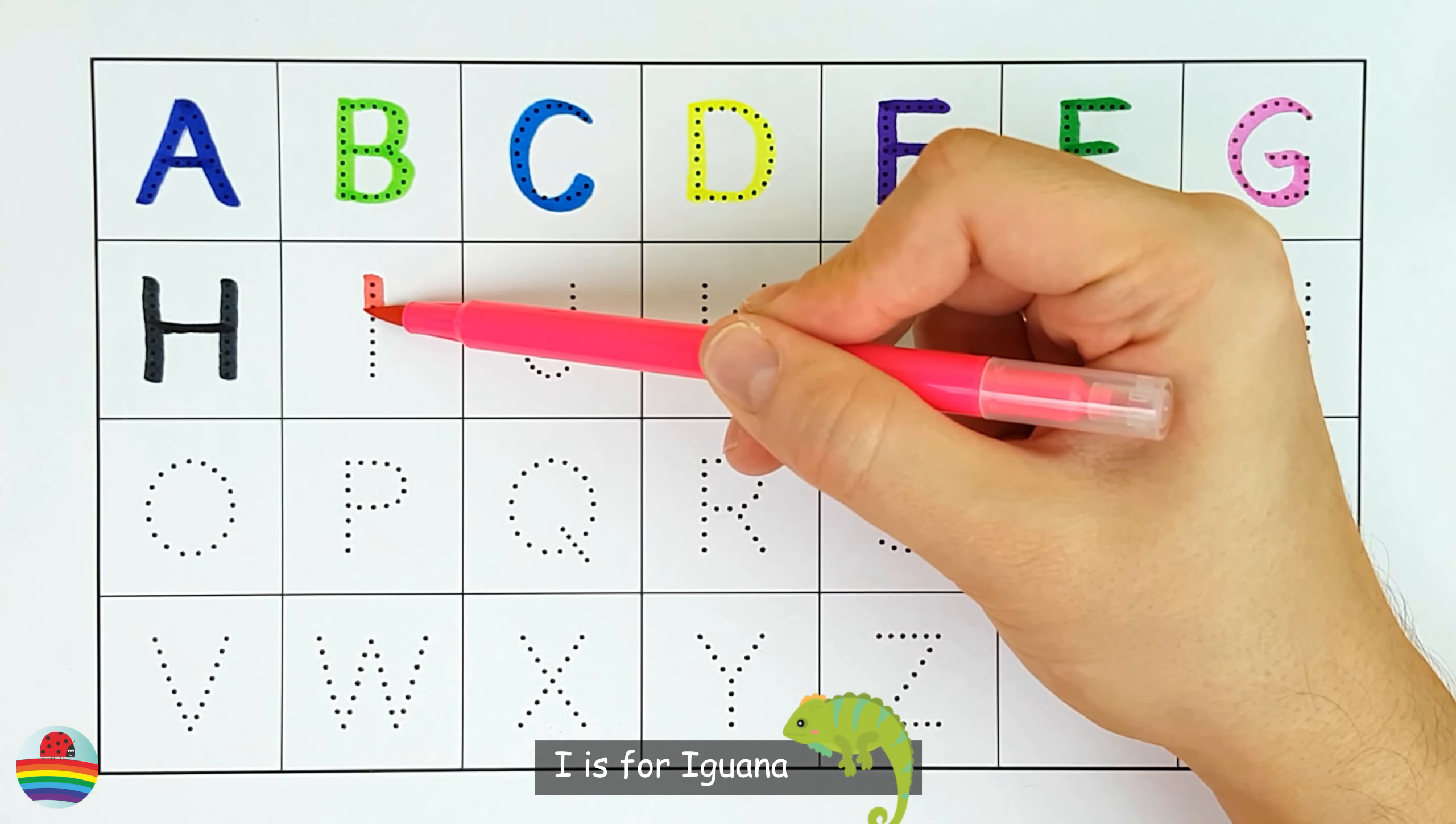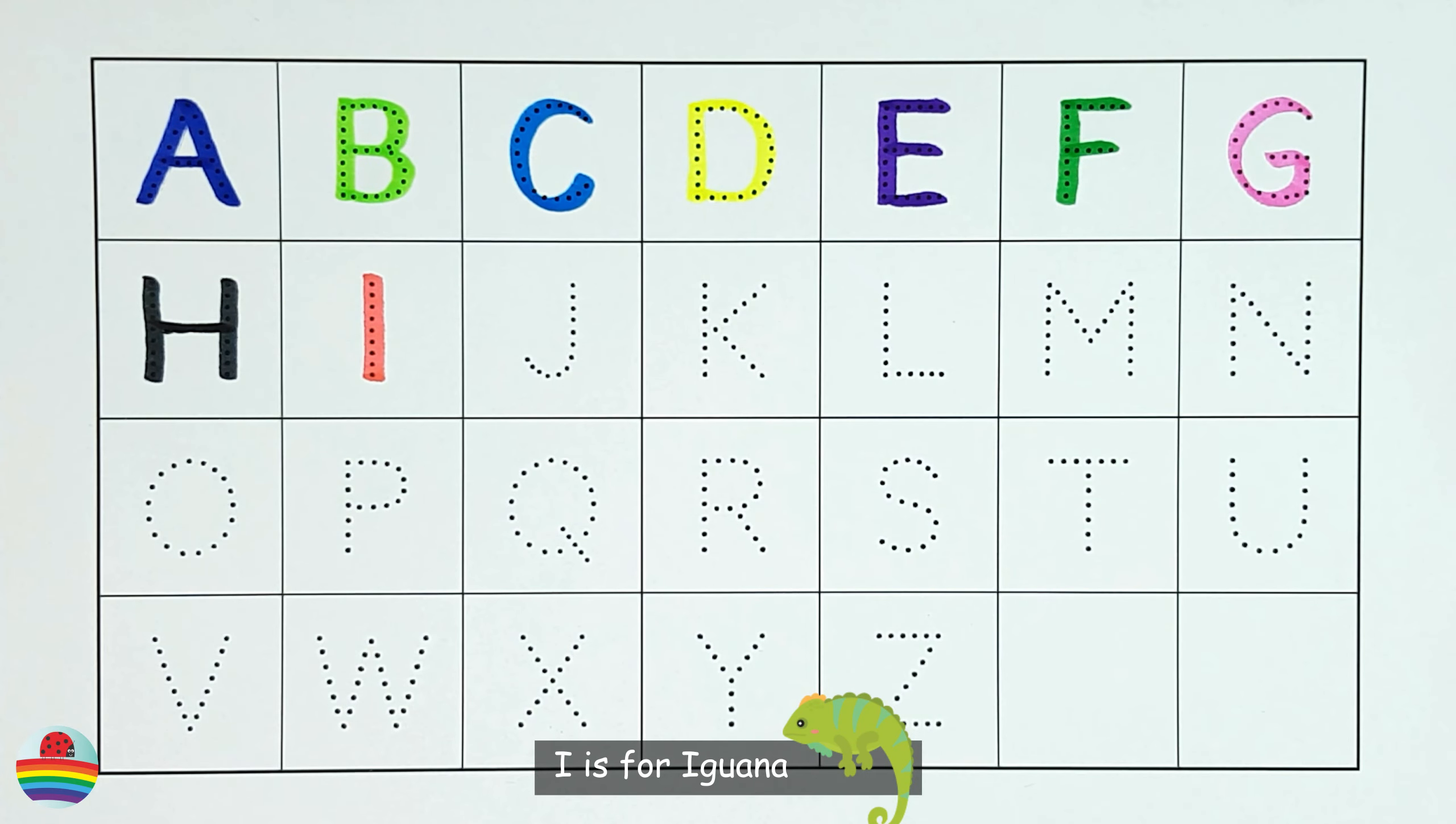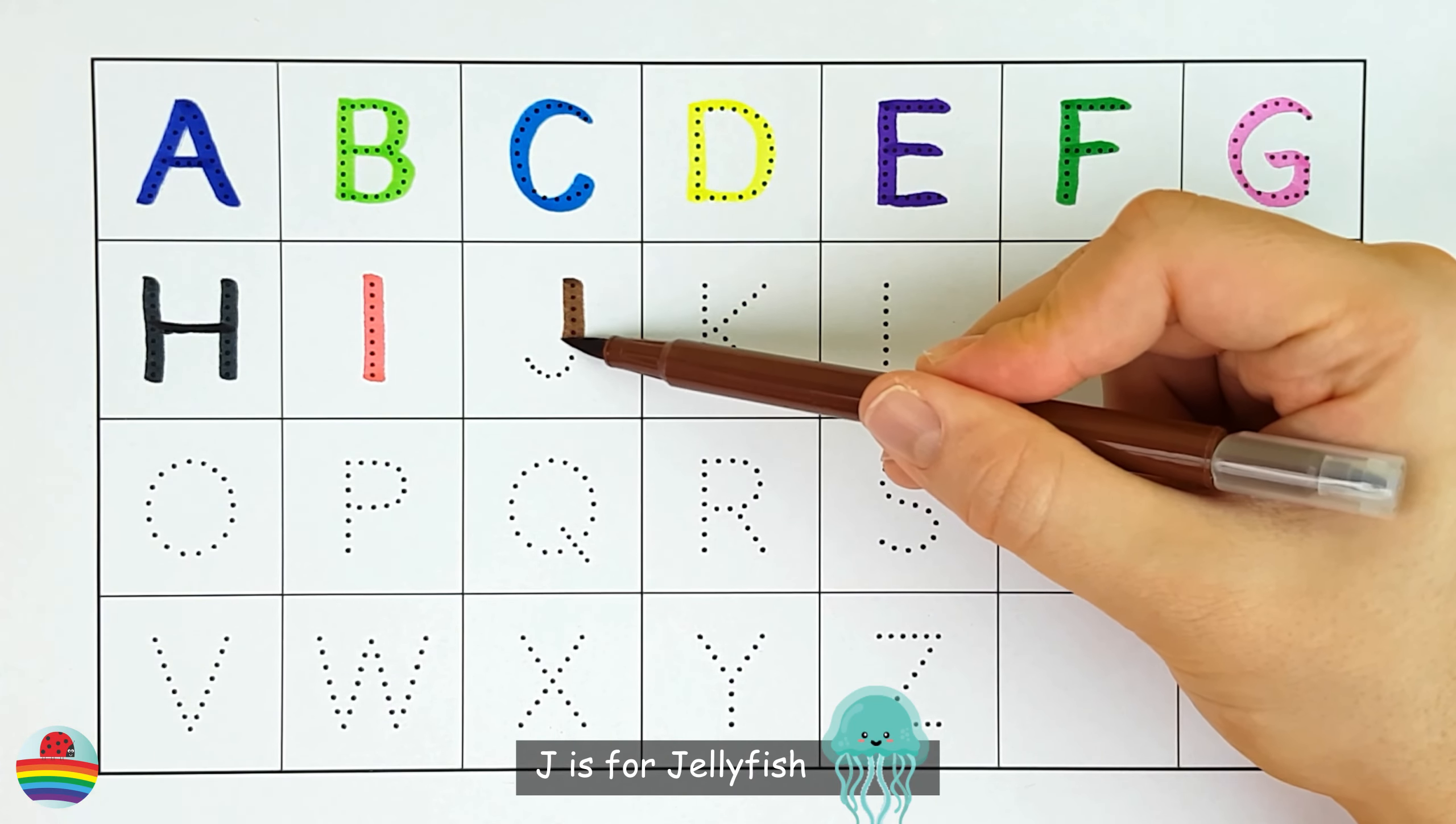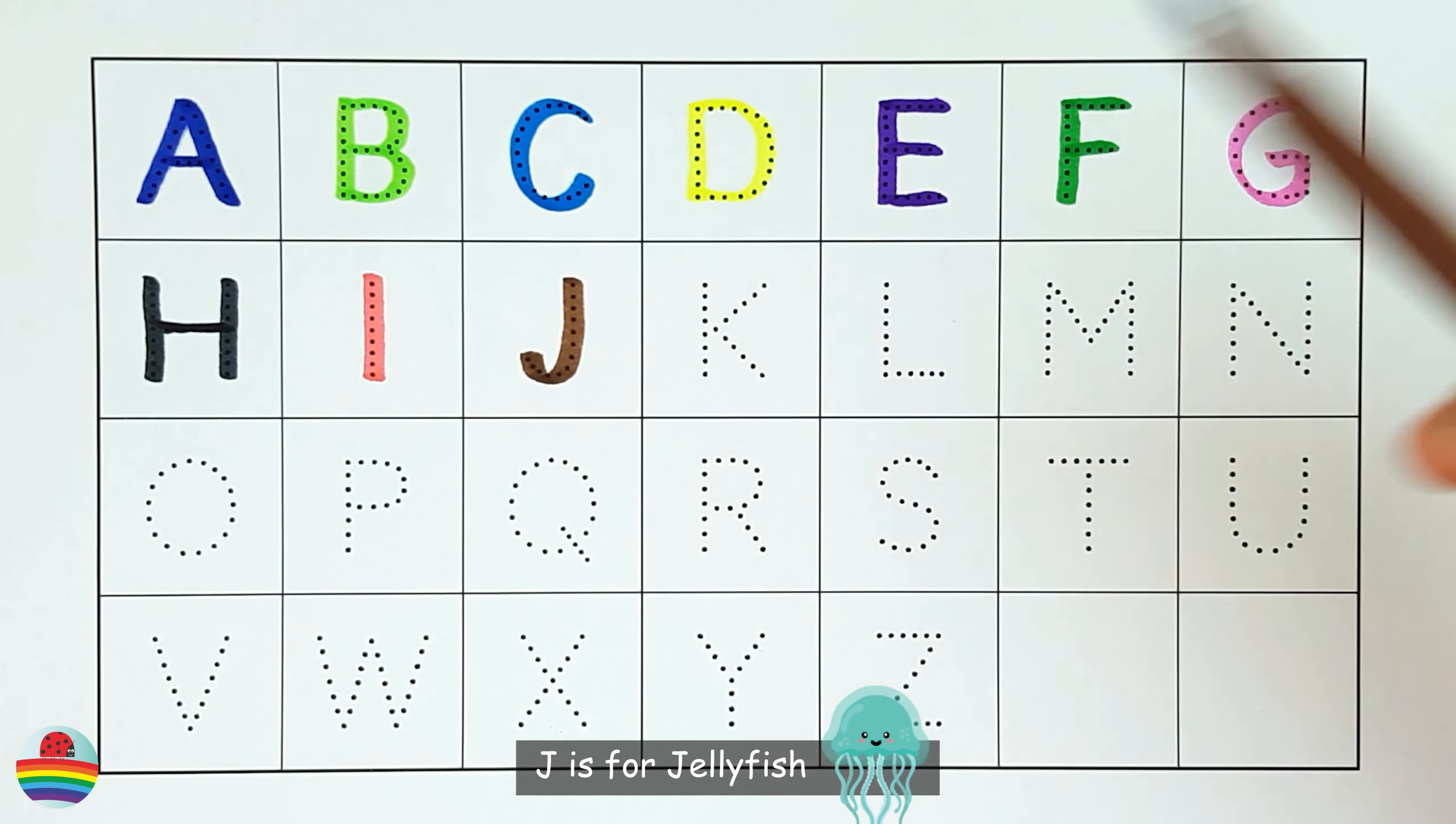I. I is for iguana. I. J. J is for jellyfish. J.